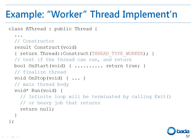This sample code shows how to use the thread class by inheriting it. In general, to use the thread class by inheriting it, you have to implement four functions. The first function is the construct function. In the construct function, you have to set the thread to be either a worker thread or an event-driven thread. The next function to be implemented is the onStart function, which initializes the thread.